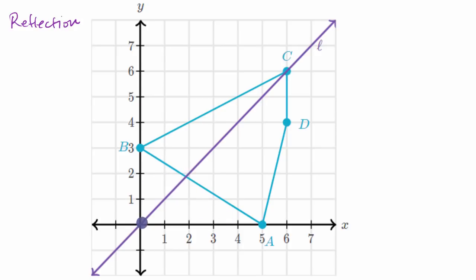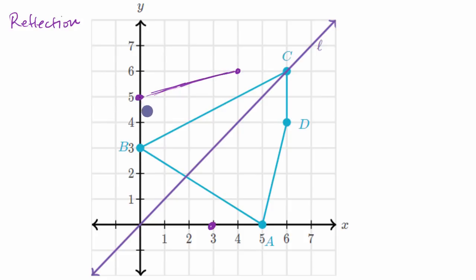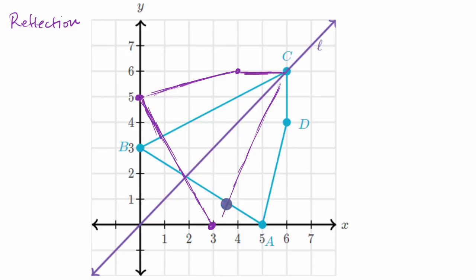We're reflecting across the line y equals x. What it essentially does to the coordinates is swap the x and y coordinates, but you don't have to know that for this video. So B prime would be right over here, A prime would be right over there, D prime would be right over here. And since C is right on the line L, its image C prime won't change. So when we reflect over line L, the reflection looks something like this.